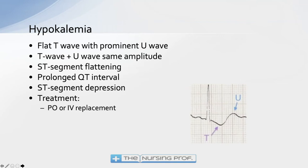With hypokalemia, remember that hyperkalemia gives you tall peaked T waves — hypokalemia gives the opposite. If you memorize the hyper findings and just flip them for hypo, the opposite thing happens. Instead of tall peaked T waves, we have flat T waves and even a prominent U wave. The diagram shows a flipped, small T wave followed by a U wave. A U wave is a reflection of delayed repolarization and is rarely seen except with very low potassium levels.